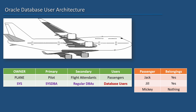Then there will be regular database users who use the database — they are like the passengers. And like passengers Jack and Jill, some can own their own objects such as tables, indexes, etc. And like Mickey, some will not own any objects at all. The users who own objects are called schemas, while users who don't own anything are called just users.